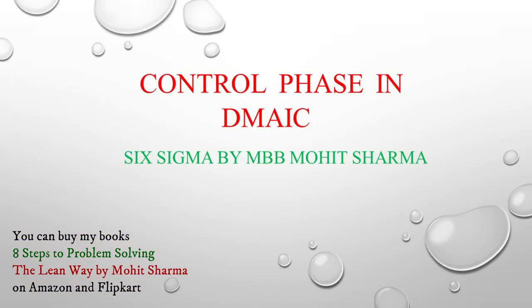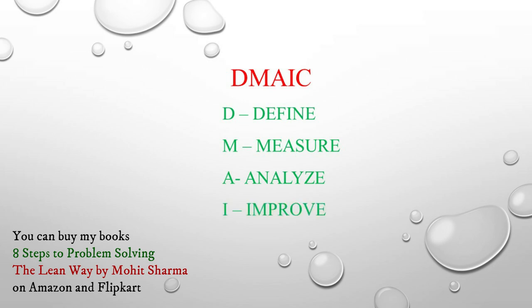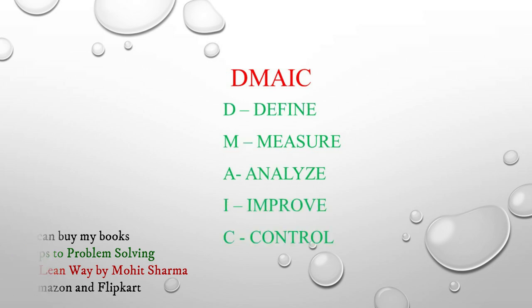Before we get started, let us quickly see what DMAIC stands for. D stands for Define, M stands for Measure, A stands for Analyze, I stands for Improve, and C stands for Control.